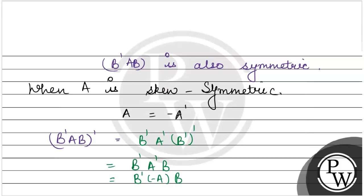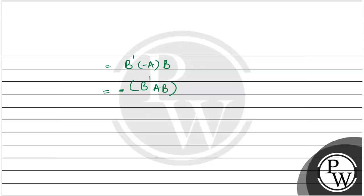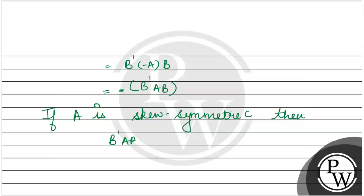So we have arrived at the result that the transpose of B'AB equals negative of B'AB. That means if A is skew-symmetric, then B'AB is also skew-symmetric. So we have proved this question using our two key concepts. Hope you understood it well. Best of luck.